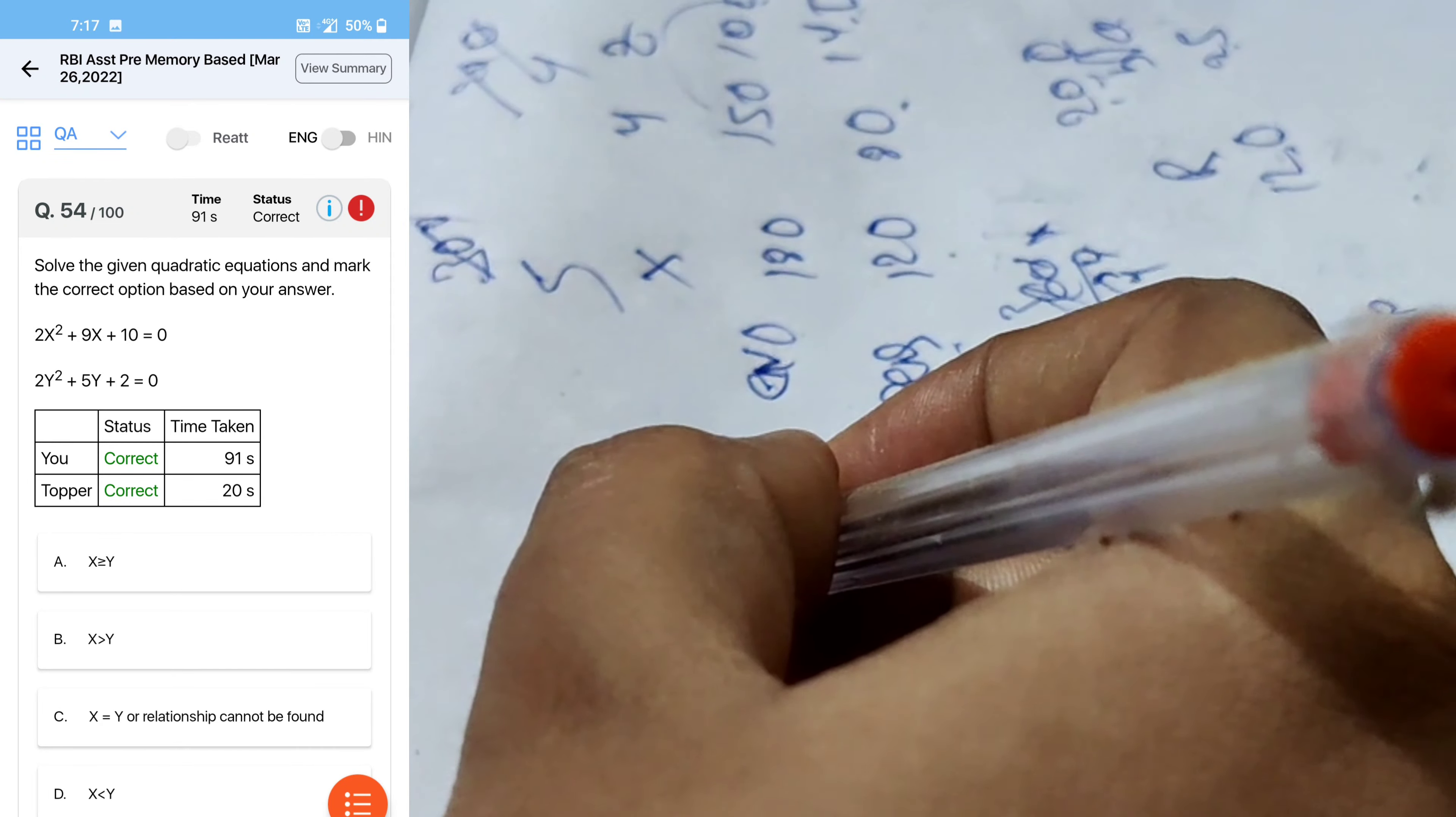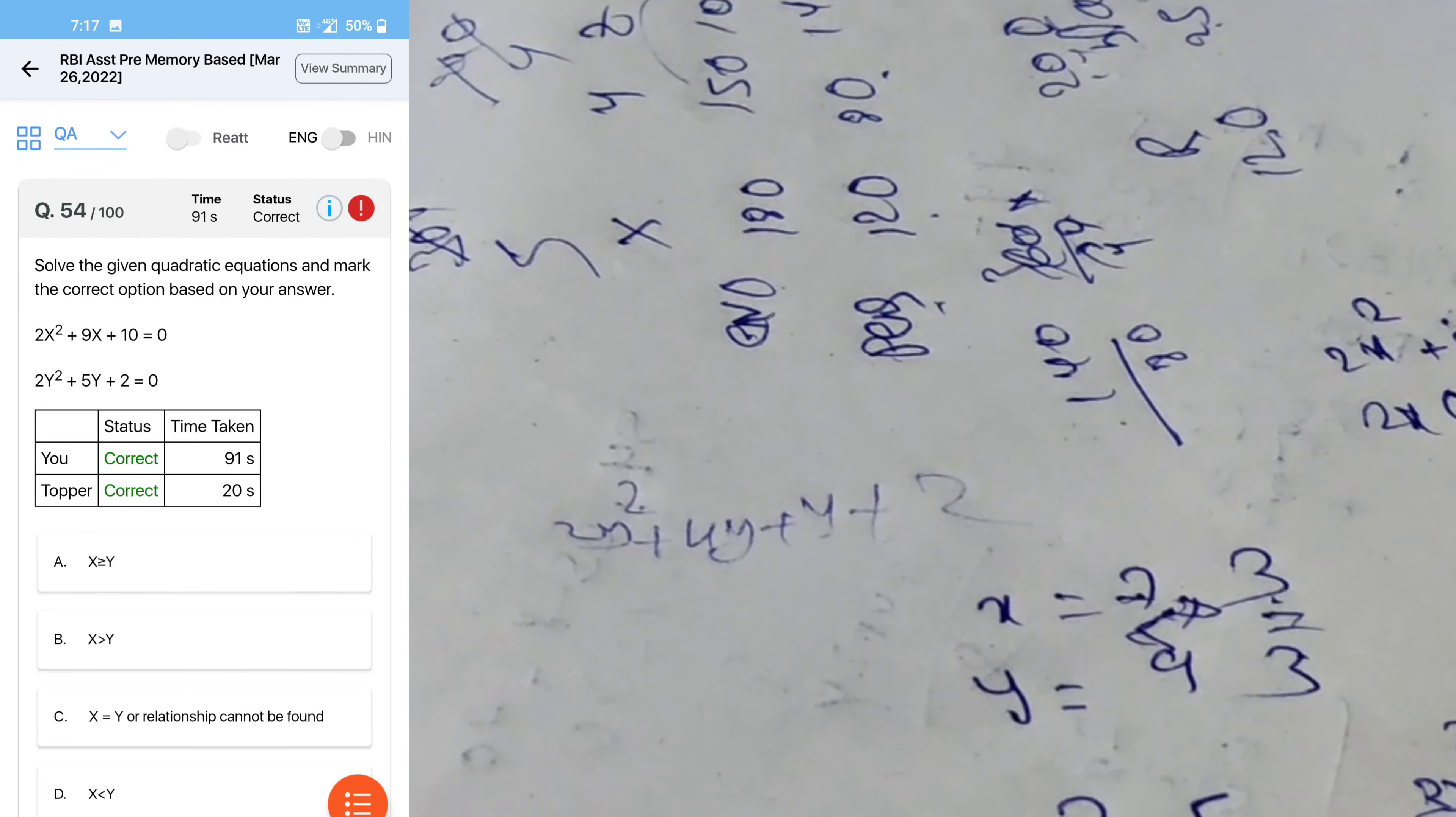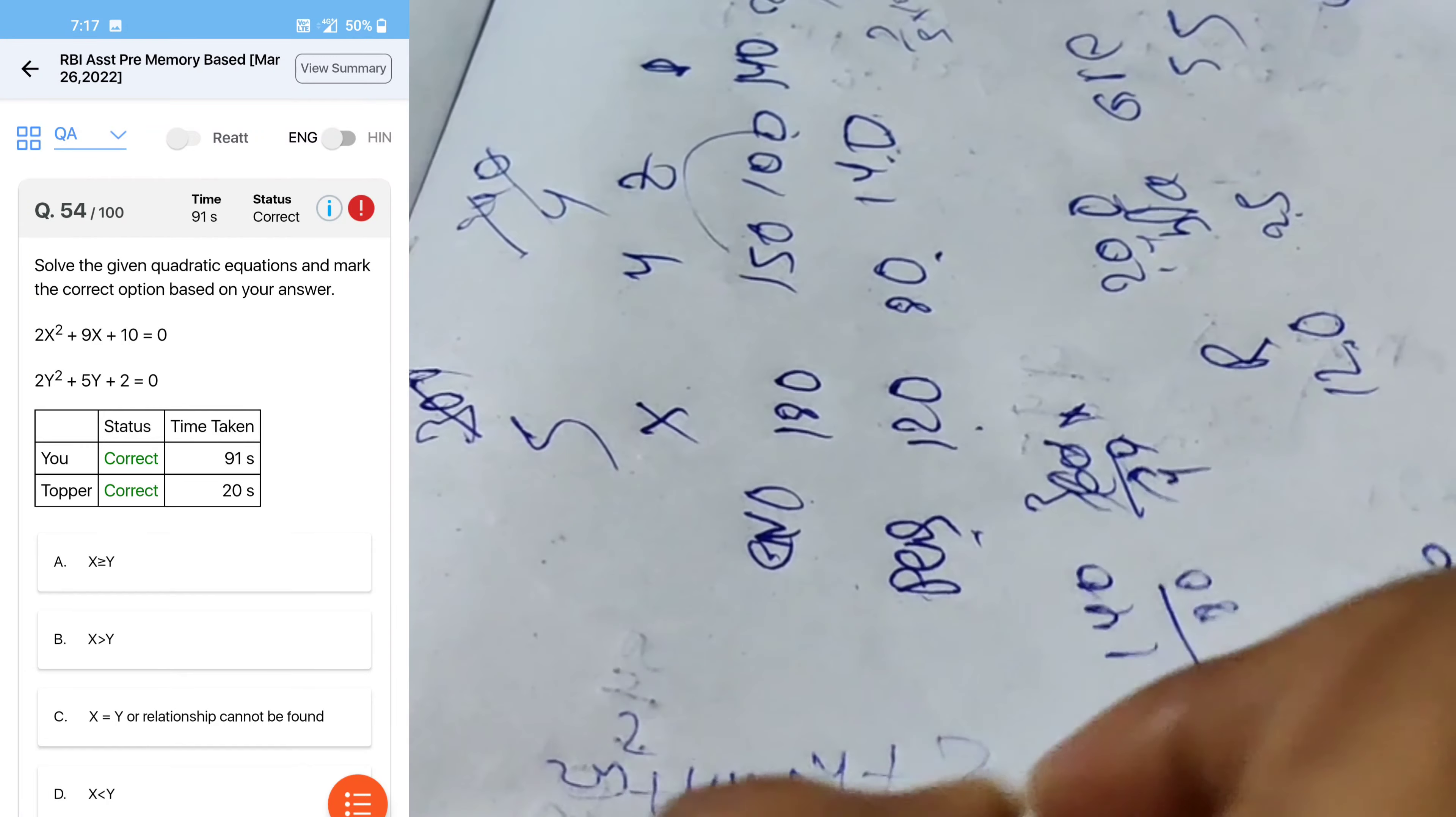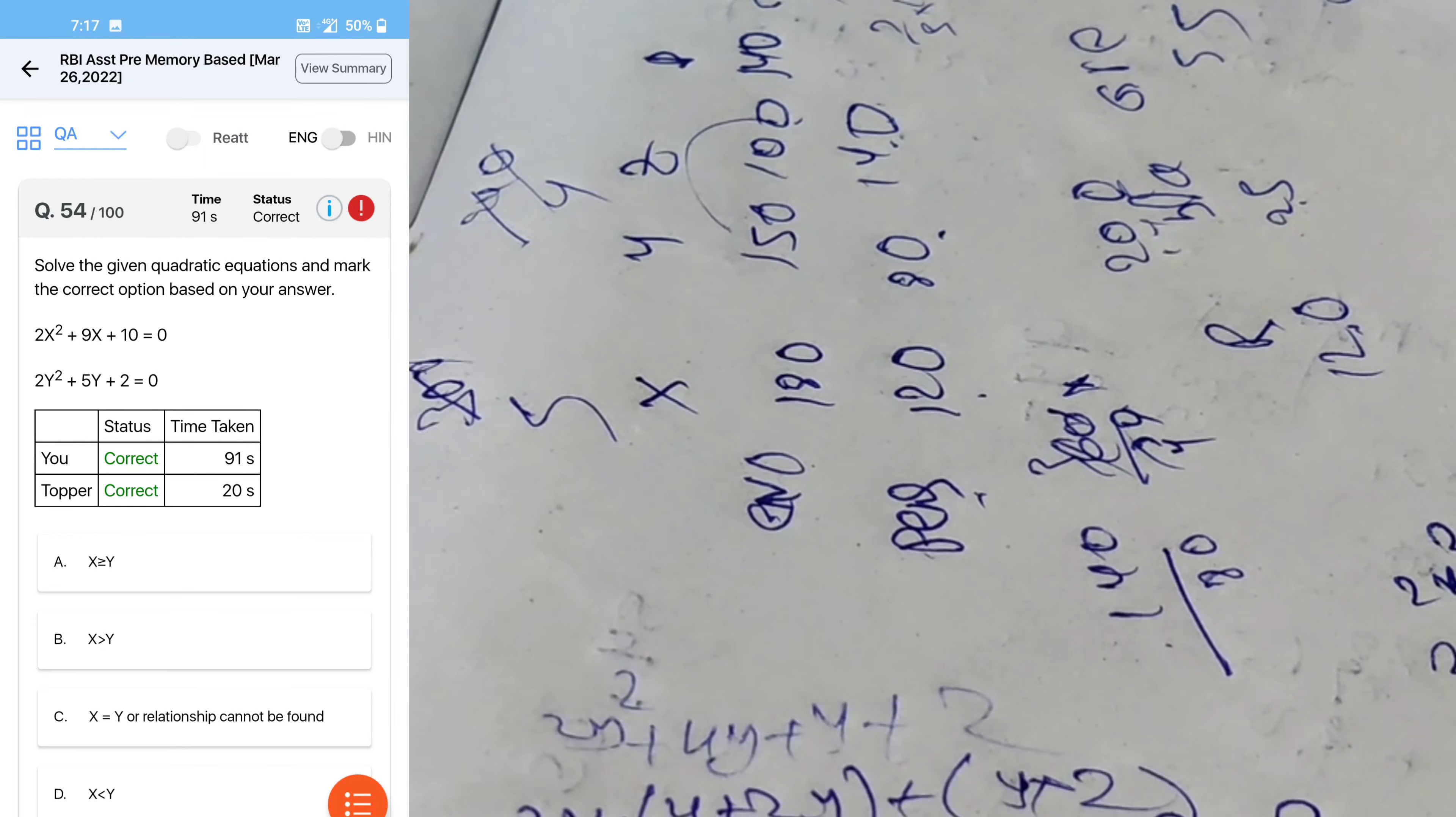2y squared plus y squared plus 4y plus y plus 2. So 2y, y plus 2, y plus, y plus 2. So y is minus 2 and minus 0.5. So here equal less than. So here x less than y.